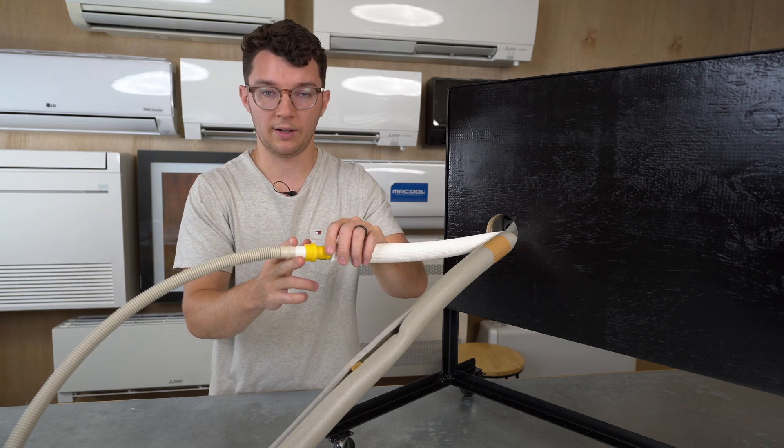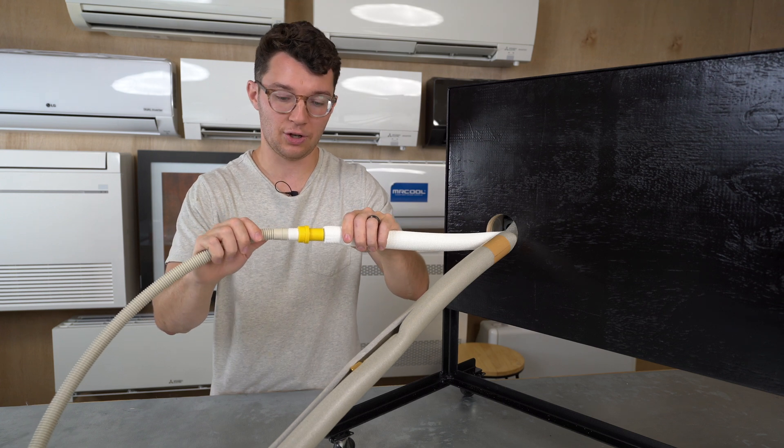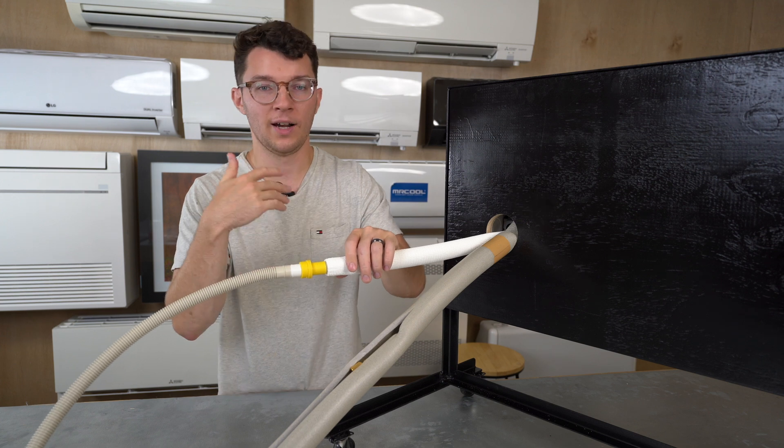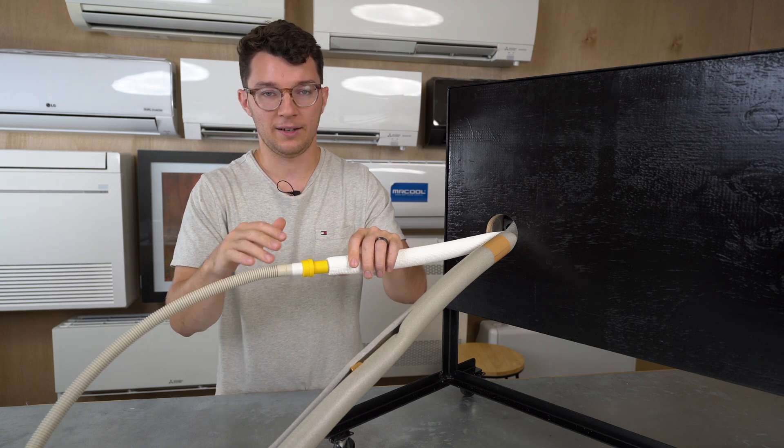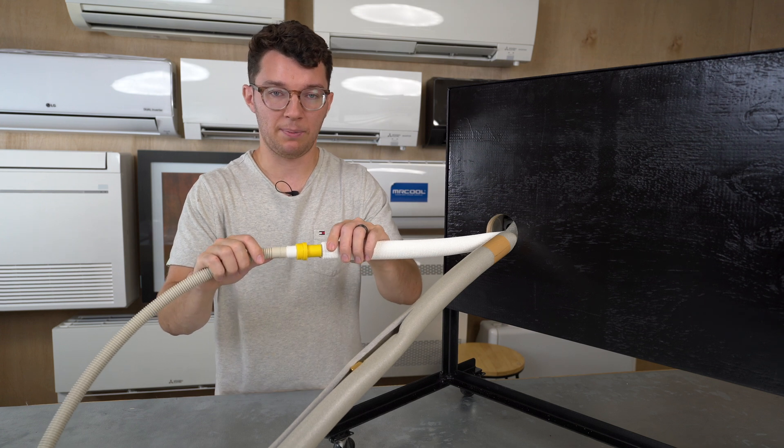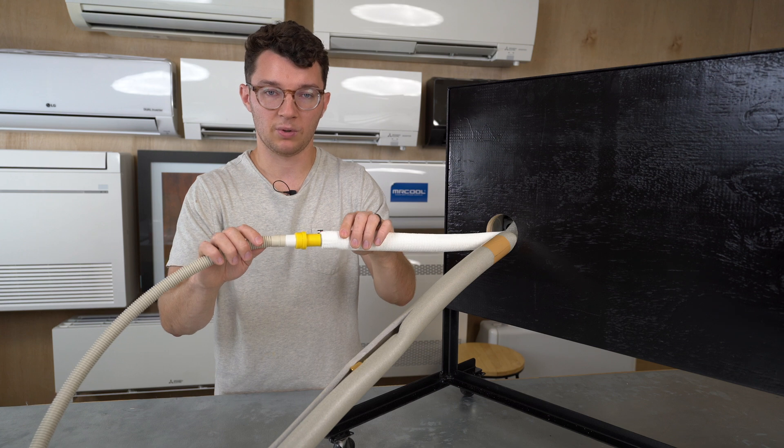From here you want to clamp it from both sides to make sure that this is a snug condensate connection, making sure that you don't have any condensate leaks in your wall or outside in places you don't want, like your closet. This is the proper way to do it and this is what most of the professionals will do.